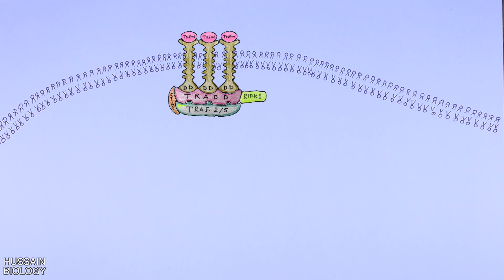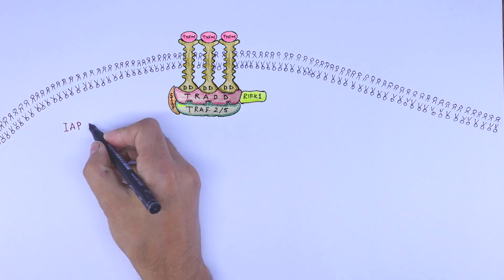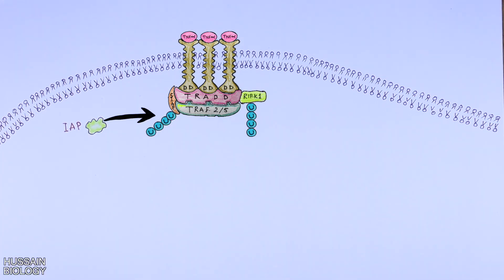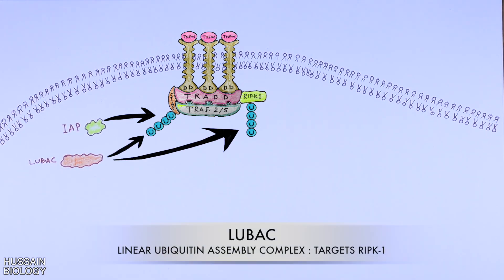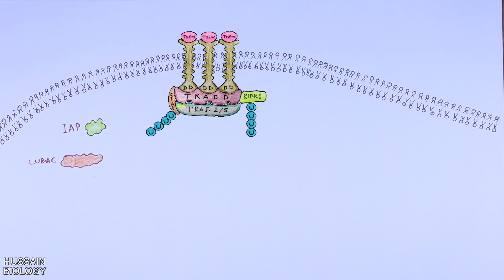From here, many different pathways emerge. First, IAP promotes ubiquitination of its own molecules and RIPK1 molecules. Once ubiquitination is completed, furthermore the Lubeck is recruited, which induces extensive ubiquitination of RIPK1, IAP, TREP2, and TREAD molecules. Now we have the ubiquitinated complex.